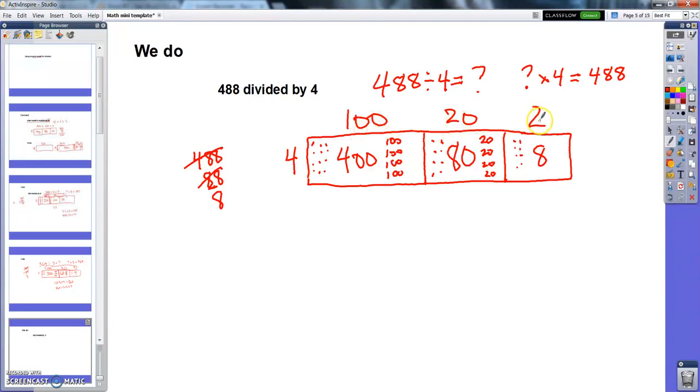Now from here I can tell that 4 times 122 is 488. That's what this model means: 4 this way times 122 this way equals 488. And since I know that, that's the same thing as knowing that 488 divided by 4 equals 122.